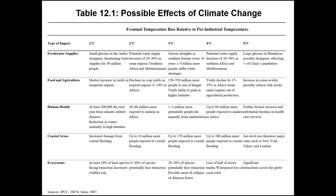This is table 12.1 in your book. It goes through some of the impacts — the costs of climate change — if we were to see a temperature rise of one degree Celsius all the way up to five degrees Celsius, and what would be the impact on different areas of our environment and our lives. It's a pretty interesting table that puts things into perspective of why we should care.